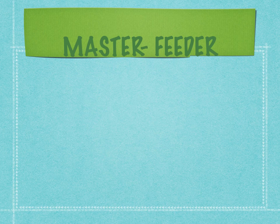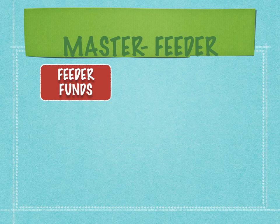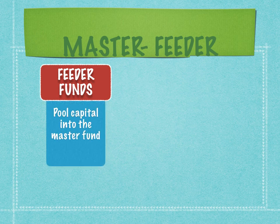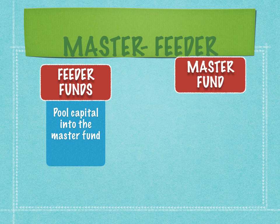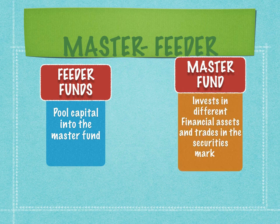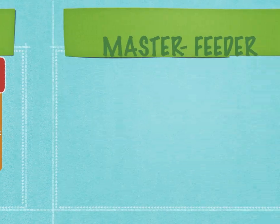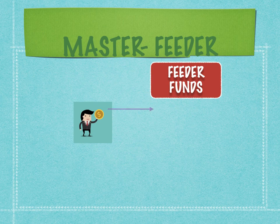The most commonly accepted structure in the United States for hedge funds is called the master-feeder structure. A feeder fund is the one that pulls capital from different investors into the master fund — the feeder fund literally feeds the master fund. The master fund collects capital from feeder funds and then invests in different financial assets, in multiple currencies, in different markets. Let's take an example of how a feeder fund collects money.